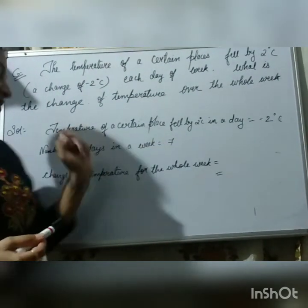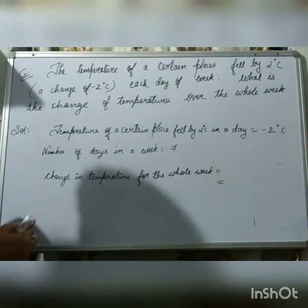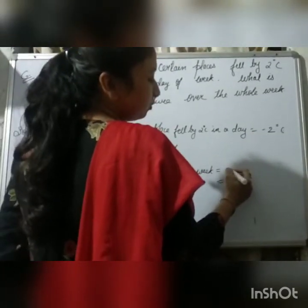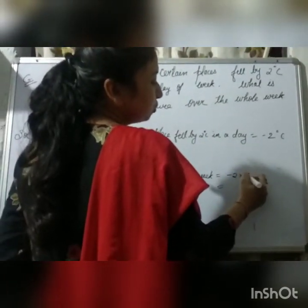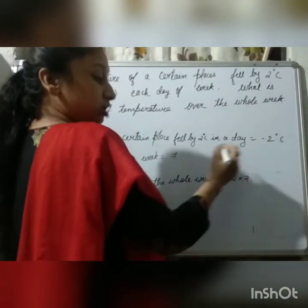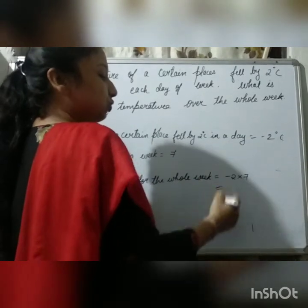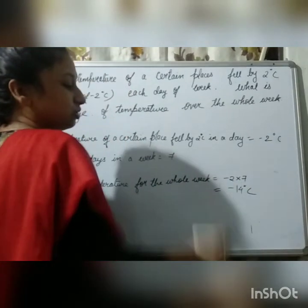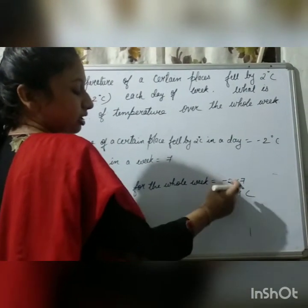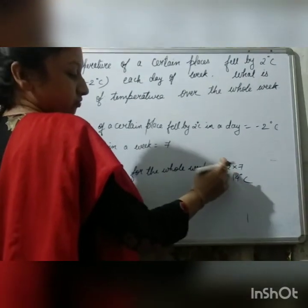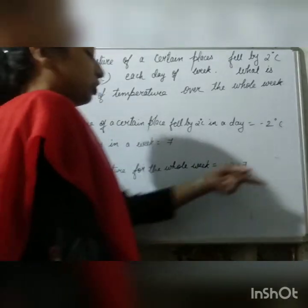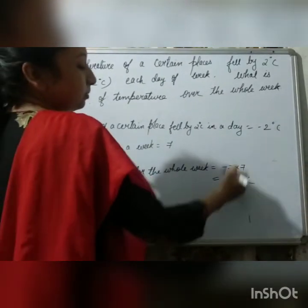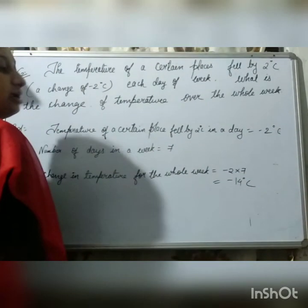Now, number of days in a week is 7. So, change in temperature for the whole week. That means how many times you will subtract 2? 7 times. That means how will you write this? Minus 2 into 7. In each day, you have to do minus 2. So, how many times? 7 times. So, what will be the answer? Minus 14 degrees Celsius. Because one is negative and one is positive. When you multiply, the product will get a negative sign. So, in the last day of the week, the temperature will be minus 14 degrees Celsius.